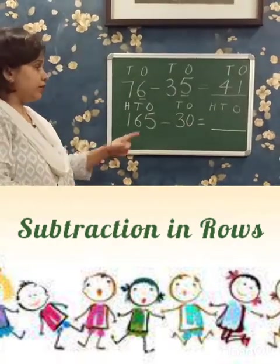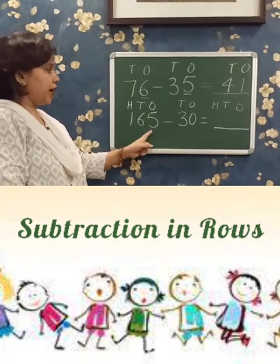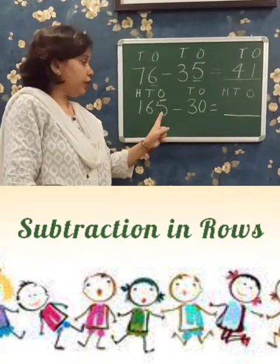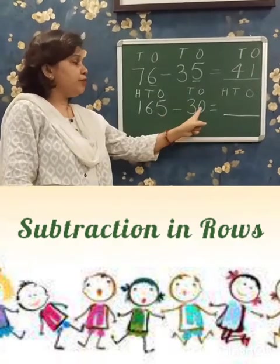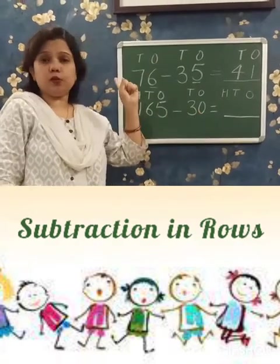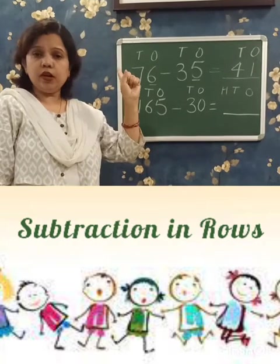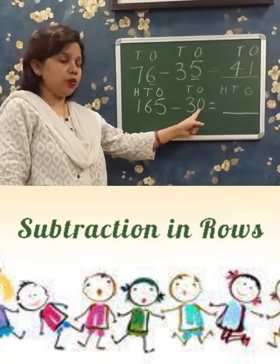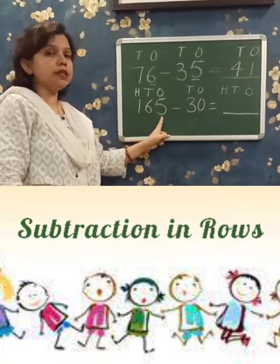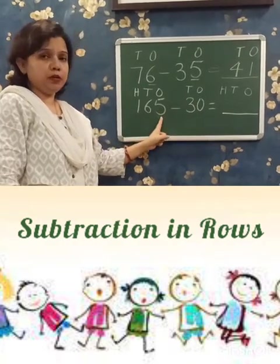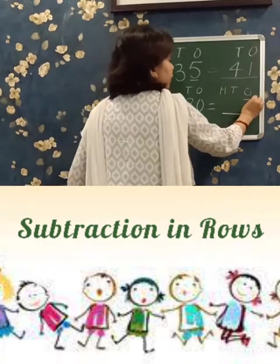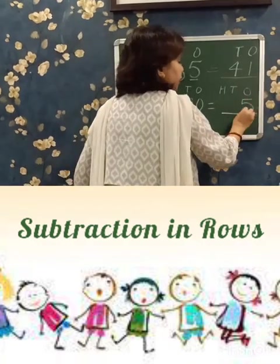Now see the 1's place: 5 minus 0. You have learnt that when we subtract 0, we get the same number. So 5 minus 0 is 5.